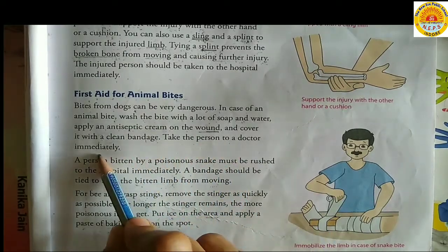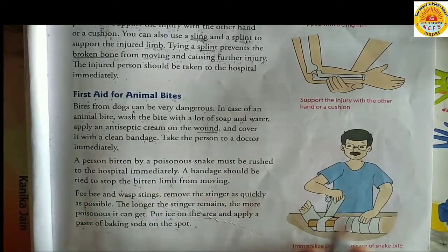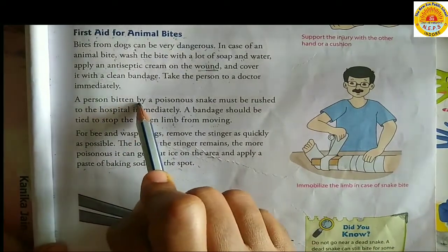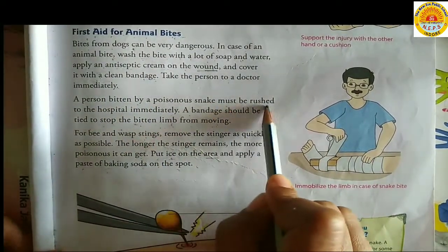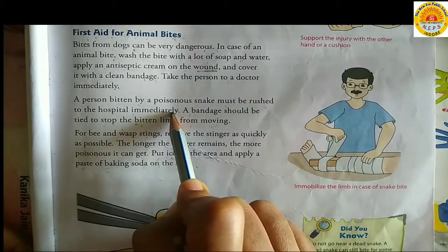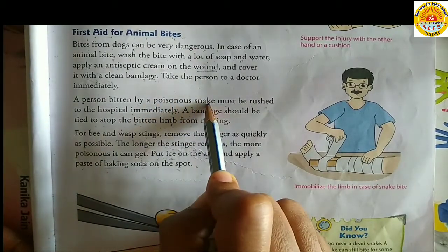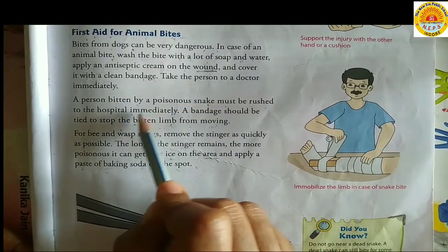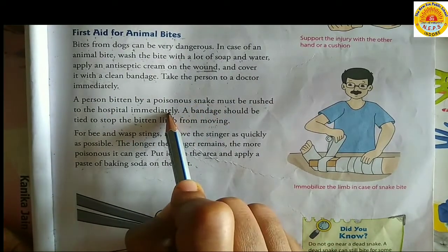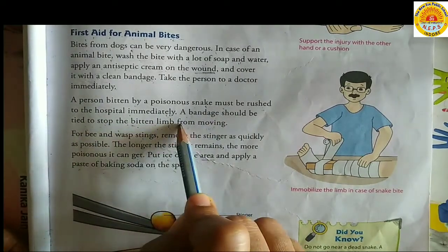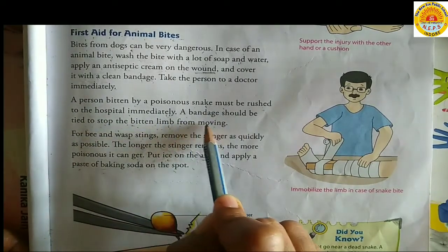A person bitten by a poisonous snake must be rushed to the hospital immediately. A bandage should be tied to stop the bitten limb from moving.